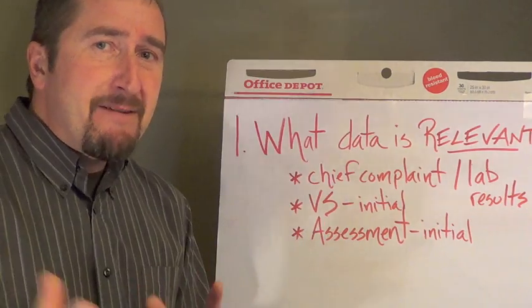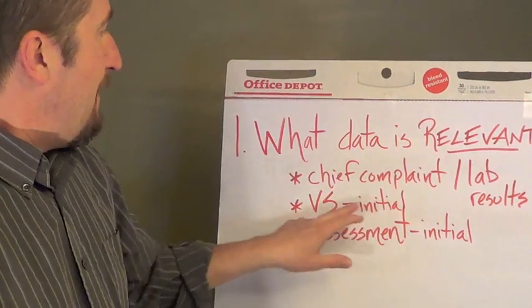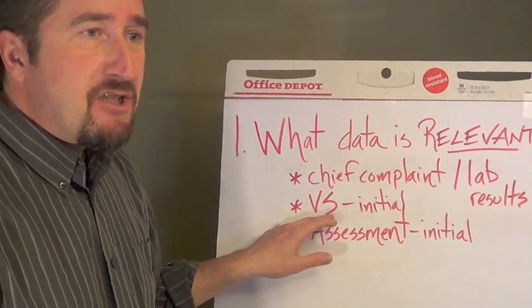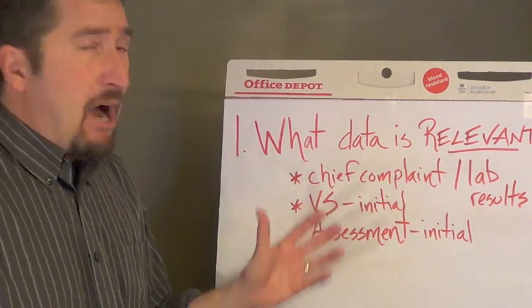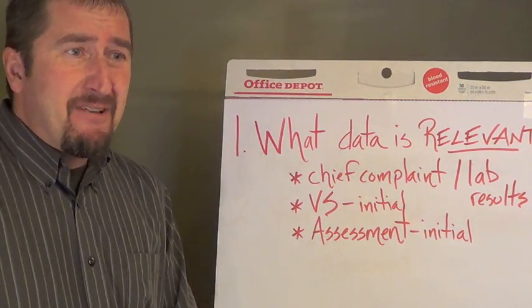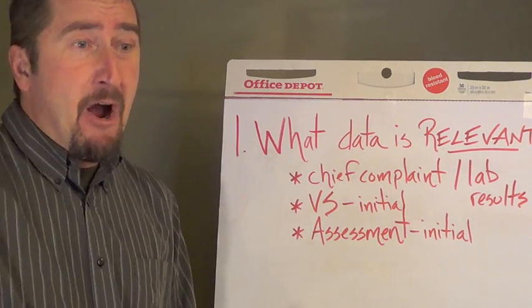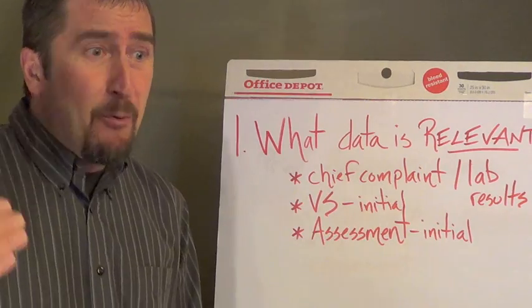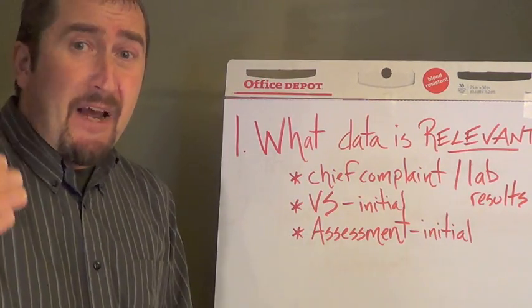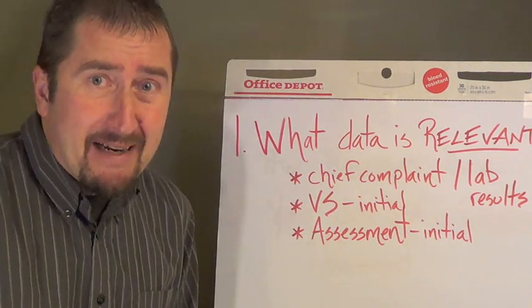Based on what we've talked about with relevant vital signs that were initially collected four hours ago, are we concerned about any of those values? Our temperature is obviously elevated at 101.8, that's SIRS criteria. Our pulse of 110 reflects SIRS criteria, but the other vital sign parameters do not. But we have a reason to be concerned.